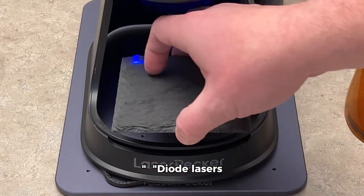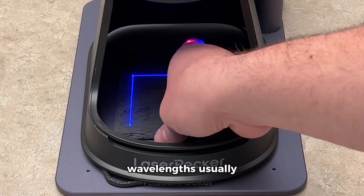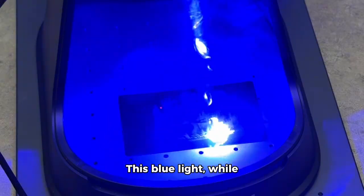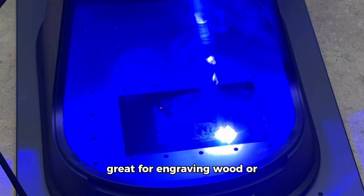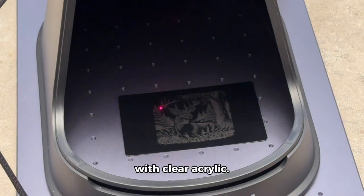Diode lasers primarily operate in the visible light spectrum, with wavelengths usually between 445 to 450 nanometers. This blue light, while great for engraving wood or cutting certain materials, has a hard time interacting with clear acrylic.